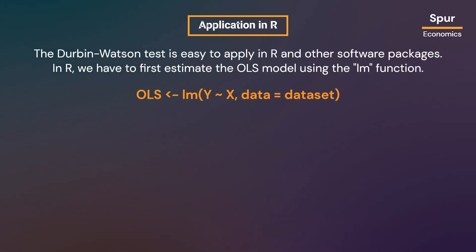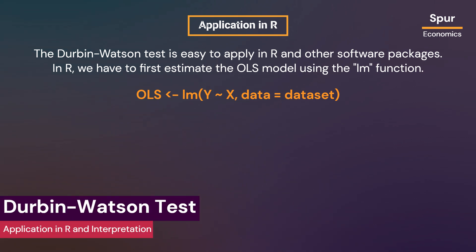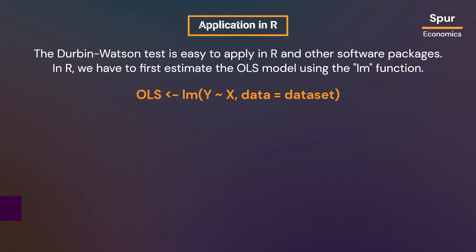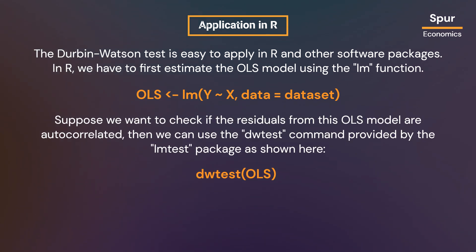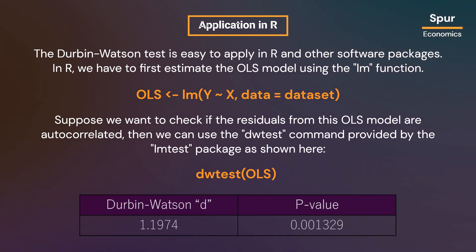The Durbin-Watson test is easy to apply in R and other software packages. In R, we first estimate the OLS model using the lm function, where Y is the dependent variable and X is the independent variable, and the data option specifies the dataset. To check if the residuals are autocorrelated, we use the dwtest command provided by the lmtest package. This command estimates the Durbin-Watson d statistic and the associated p-value. Suppose the results report a d statistic of 1.1974 and a p-value of 0.001329 — since the p-value is less than 0.05, we reject the null hypothesis and conclude that the residuals are autocorrelated.